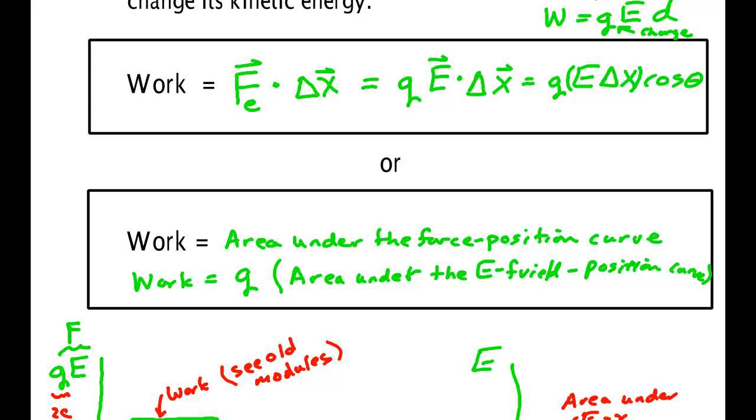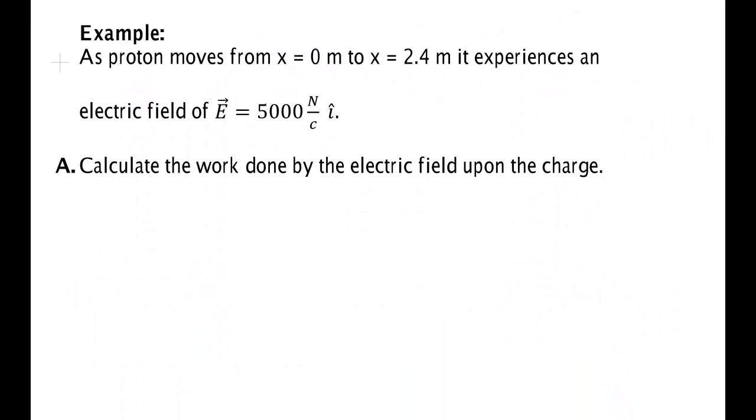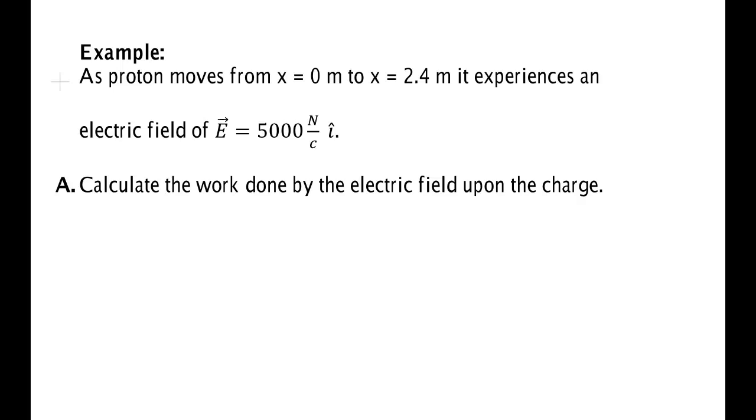So let's look at some example problems using these ideas. A proton moves from X equals 0 meters to X equals 2.4 meters and experiences an electric field in the X direction of 5000 newton per coulomb I hat. Calculate the work done by the electric field upon this charge.